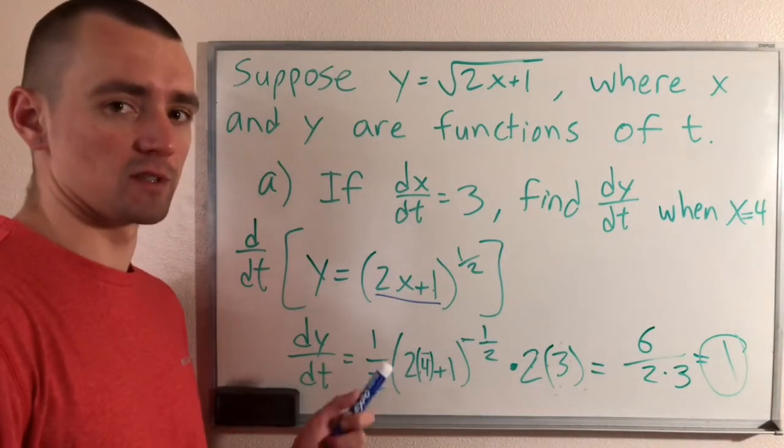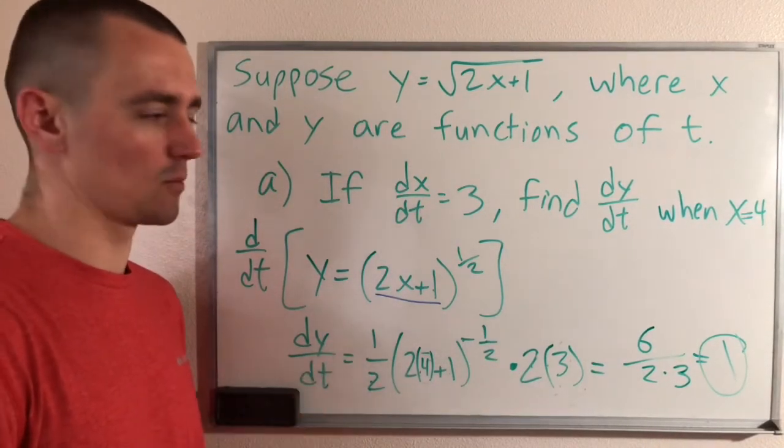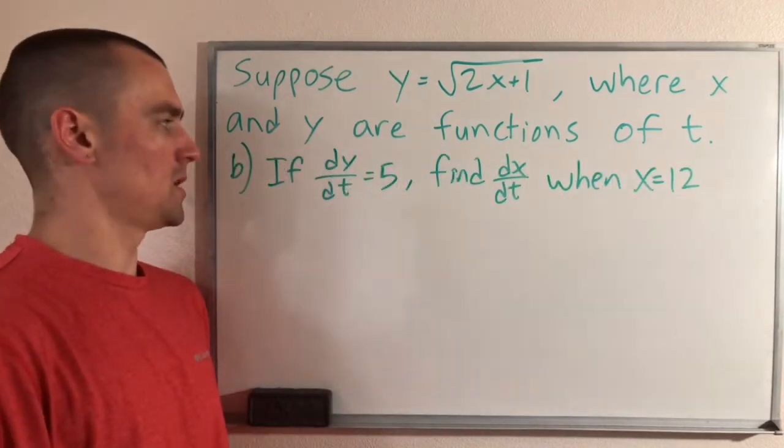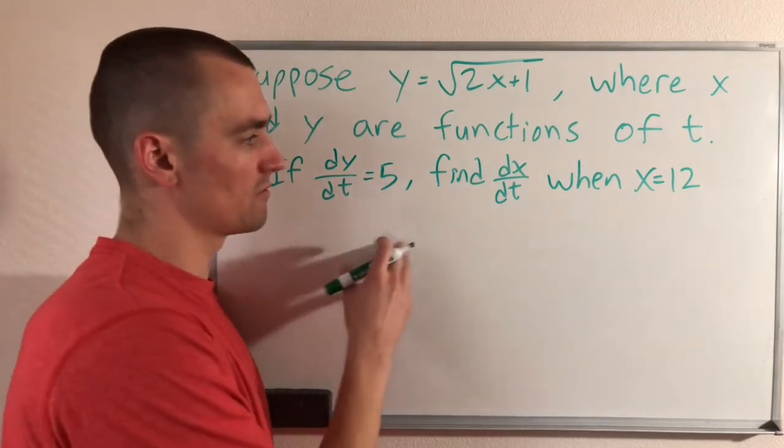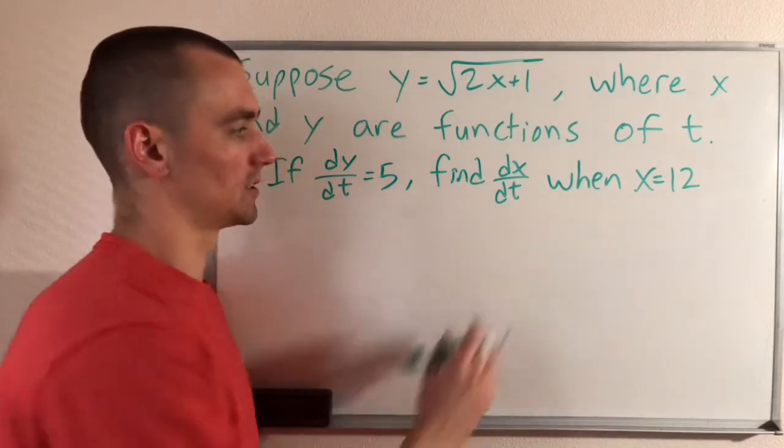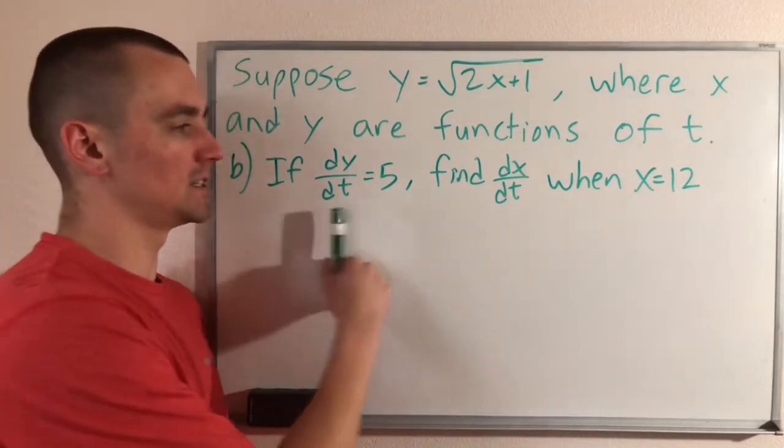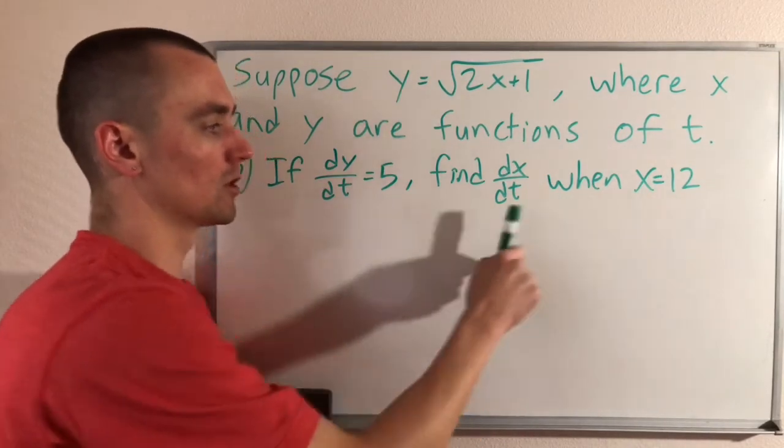But we're not done yet. Remember, this is a two-part question. So let's go on to the second part now. In the second part of this question, part B, we're trying to say if dy/dt equals 5, find dx/dt when x equals 12. So now we know what dy/dt and x are, and we're looking for dx/dt.